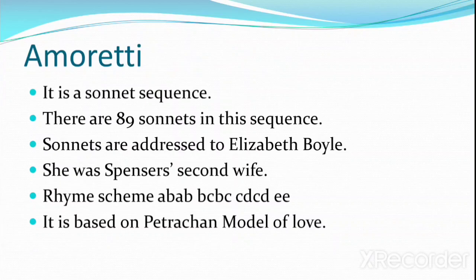All the sonnets are addressed to Elizabeth Boyle, who happened to be Spenser's second wife. This particular sonnet sequence is based on the Petrarchan model of love, and the rhyme scheme is ABAB BCBC CDCD EE.